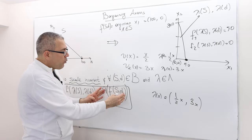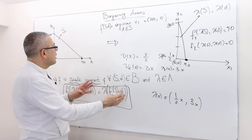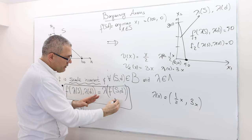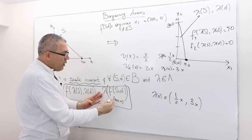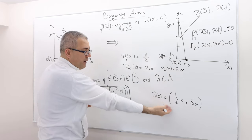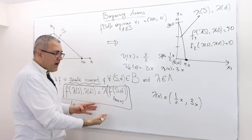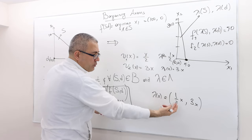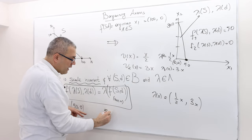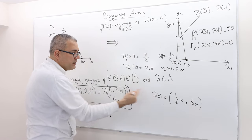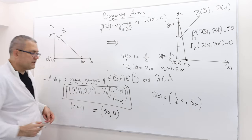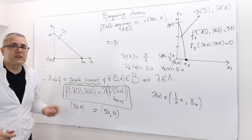What was my solution in the original problem? It was (100, 0). If I transform that with exactly this function: 100 × (1/2) = 50, and 0 × 3 = 0. So λ(f(S, d)) = (50, 0). Are f(λS, λd) and λ(f(S, d)) the same? Yes, they are the same. Very good.